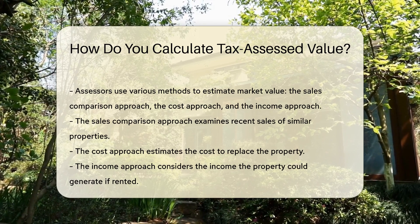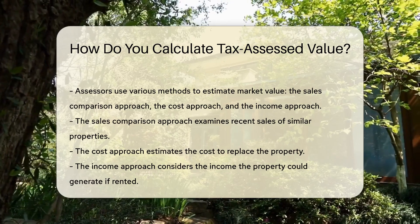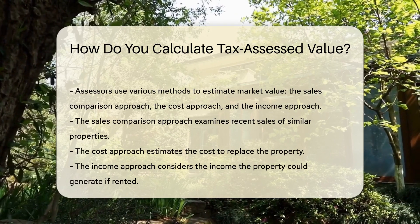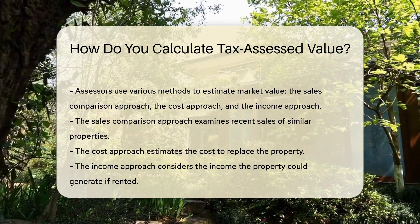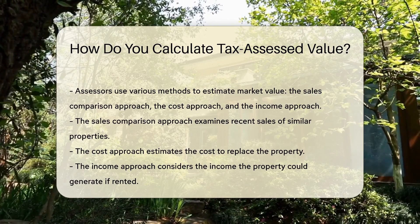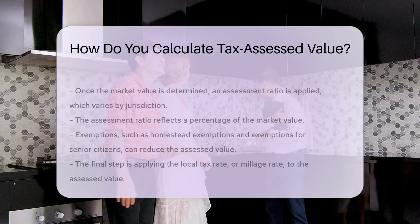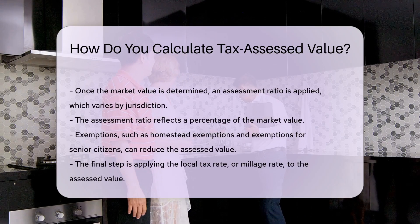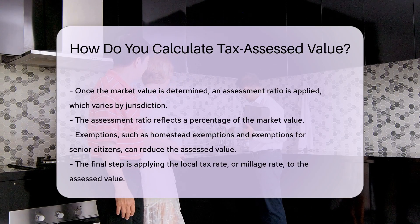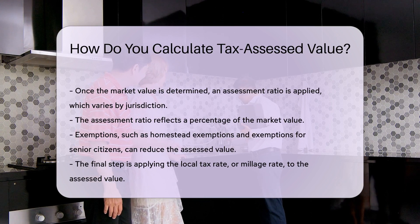Once the market value is determined, the assessor applies an assessment ratio. This ratio varies by jurisdiction and reflects a percentage of the market value. For example, if the market value is $200,000 and the assessment ratio is 80%, the assessed value would be $160,000.